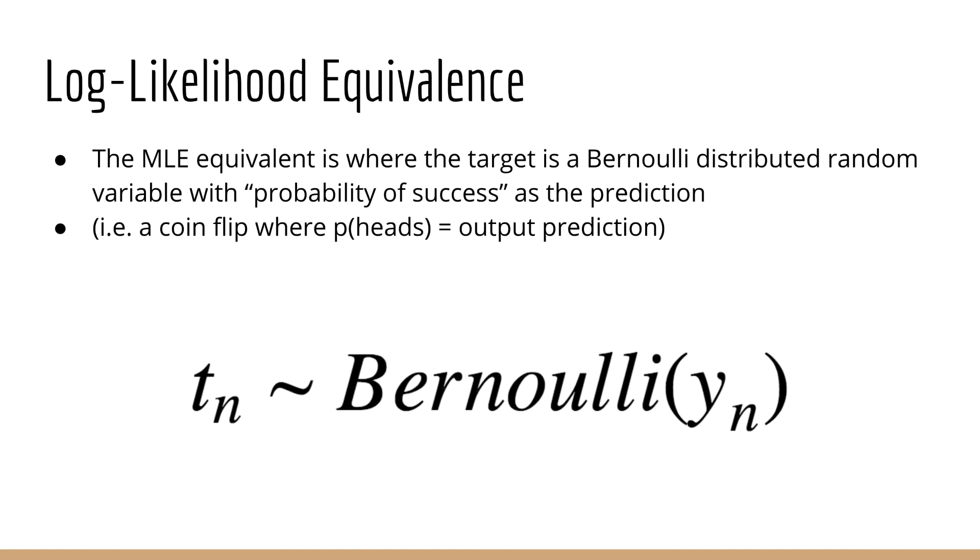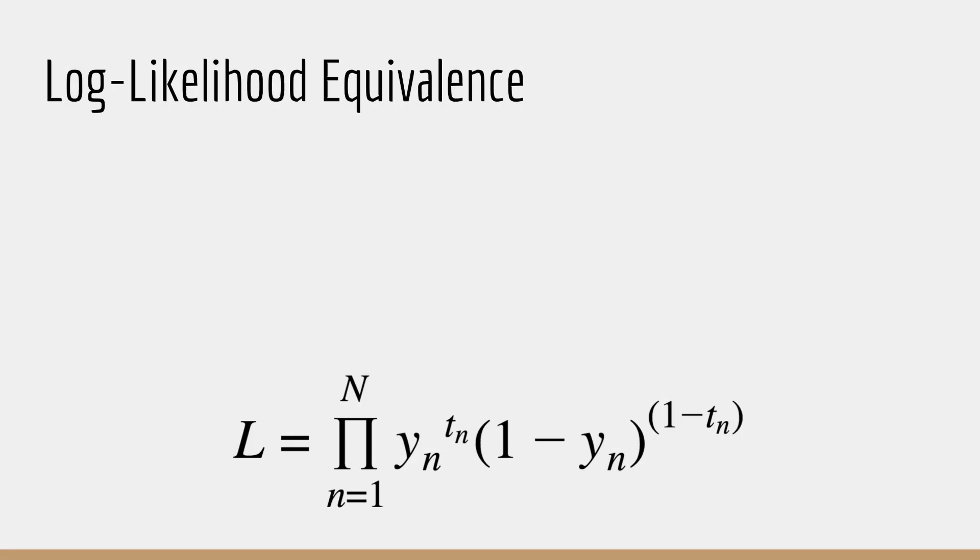The question now is, what's the log likelihood equivalent of the binary cross entropy? Well, it turns out that this corresponds to a Bernoulli distributed random variable. In this case, t of n is again the random variable, which is Bernoulli distributed, and y of n is the mean of the Bernoulli distribution. As before, if you want to prove that this is true, you can just write down the likelihood.